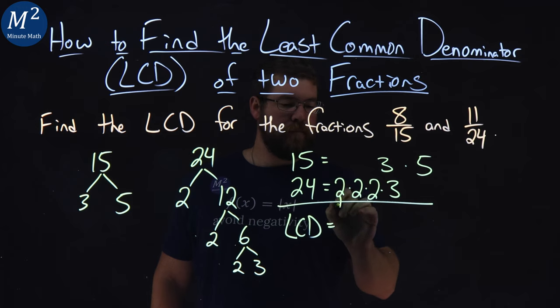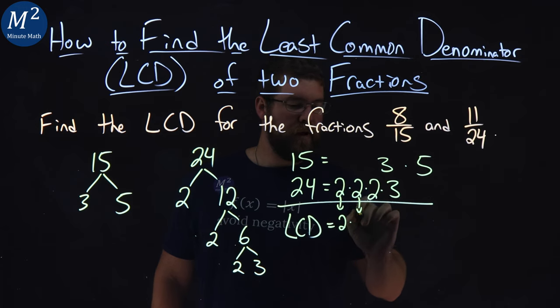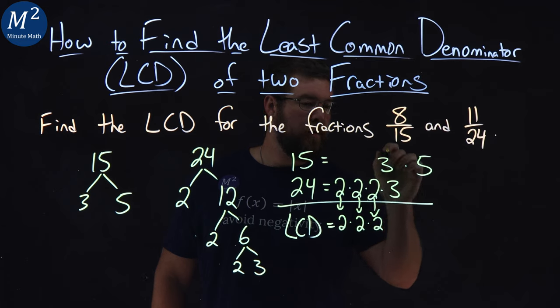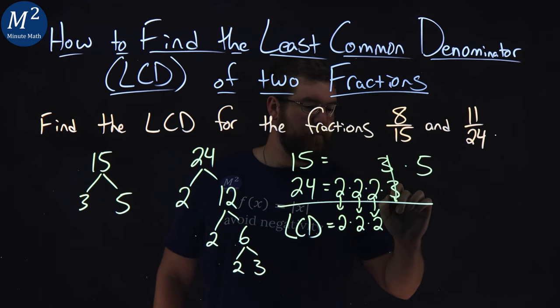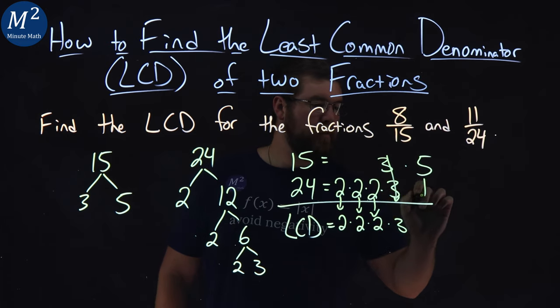Two comes down, times two comes down, times two comes down, the two threes lined up. So we just have one three down here, and the five.